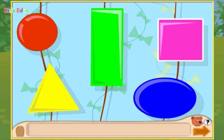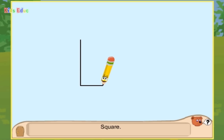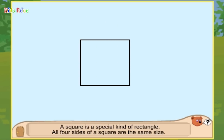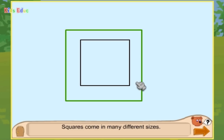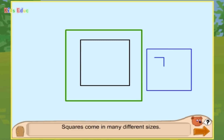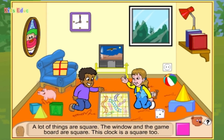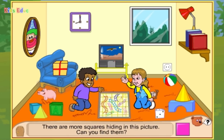Square. This is how you draw a square. A square is a special kind of rectangle. All four sides of a square are the same size: one, two, three, four. Great! Squares come in many different sizes. A lot of things are square. The window and the game board are square. This clock is square too. There are more squares hiding in this picture. Can you find them?